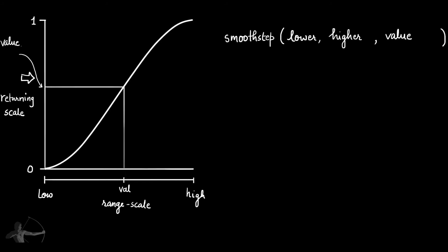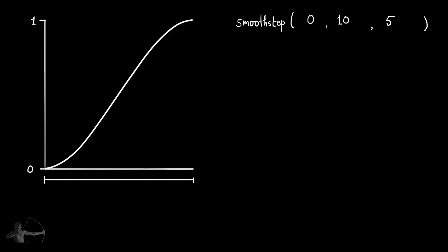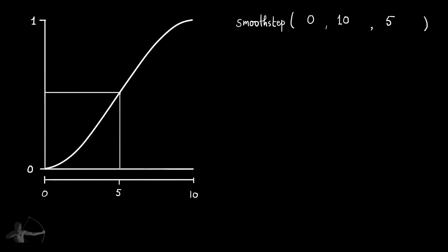Let's understand with an example how we bring a value between 0 and 1 based on a range. Our smoothstep function has a lower range value of 0, a higher range value of 10, and the value we want to squeeze is 5. The low range value comes at one corner and the high range value at the other corner. The value 5 lies at the center of this scale, and when mapped onto the graph and then onto the returning scale, the result is 0.5 — so smoothstep returns 0.5.